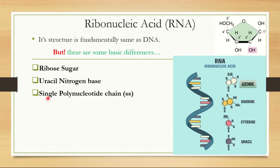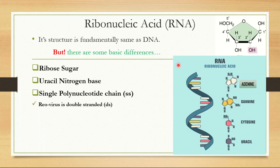This is a single polynucleotide chain. There are many nucleotides joined by phosphodiester bonds forming a chain. So RNA is a single strand — mostly, but not always.